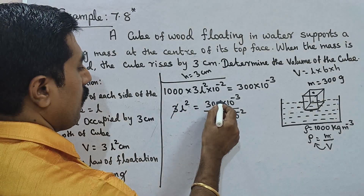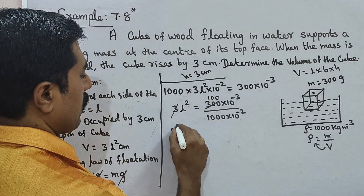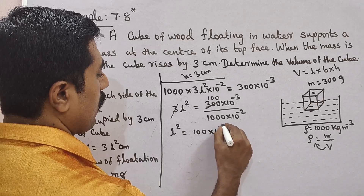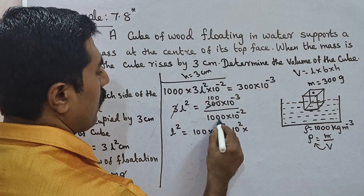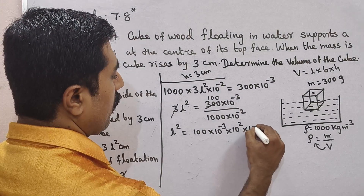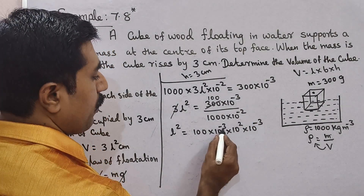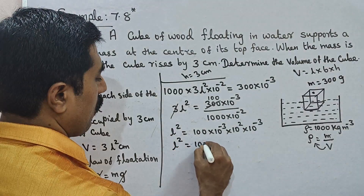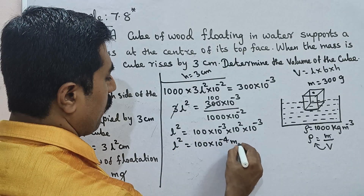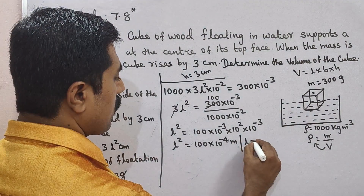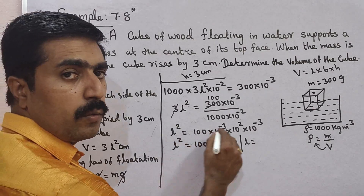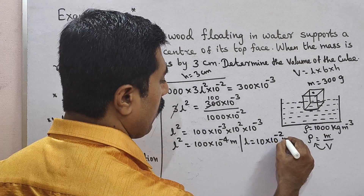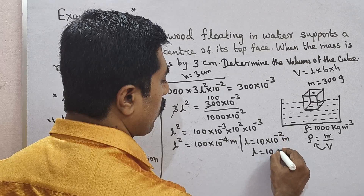So 3L² equals 300 times 10⁻³ divided by 1000 times 10⁻². Simplifying: 3 cancels with 300 giving 100, and 10⁻³ divided by 10⁻² gives 10⁻¹, so L² equals 100 times 10⁻³ divided by 10⁻² which equals 10⁻² m², meaning L equals 10 cm.